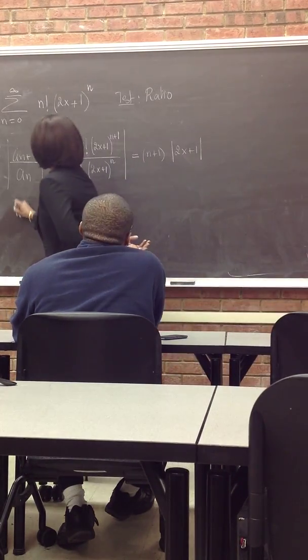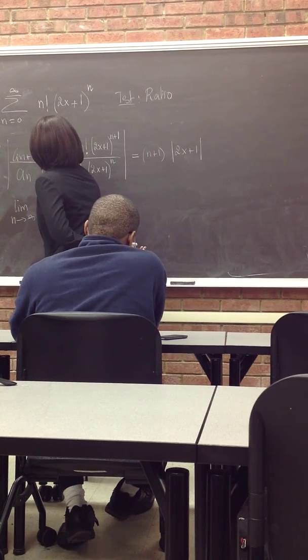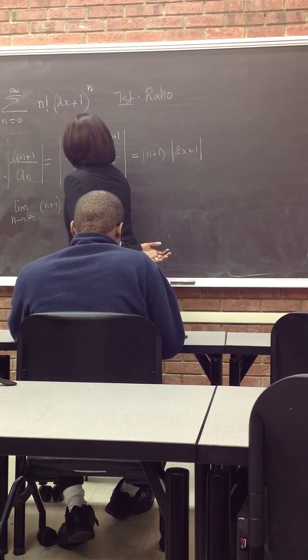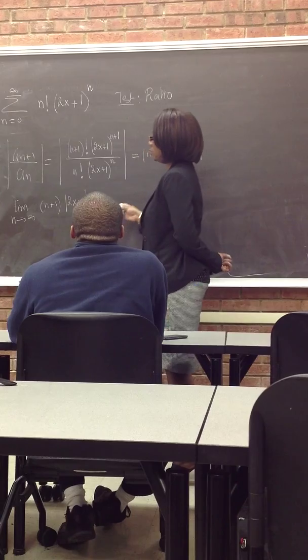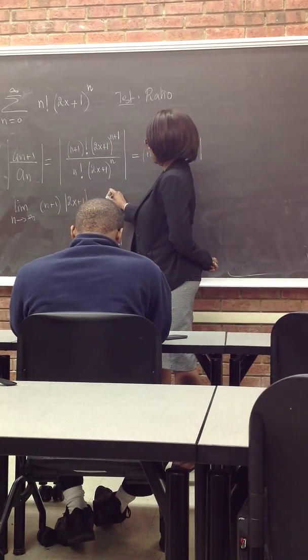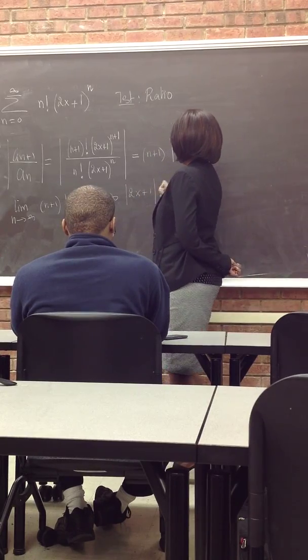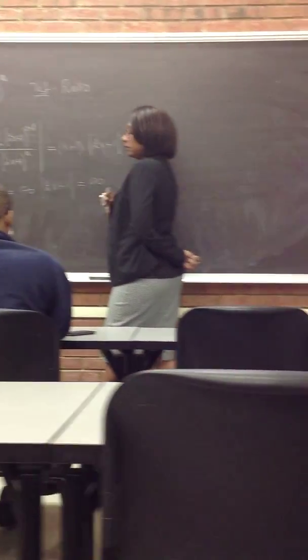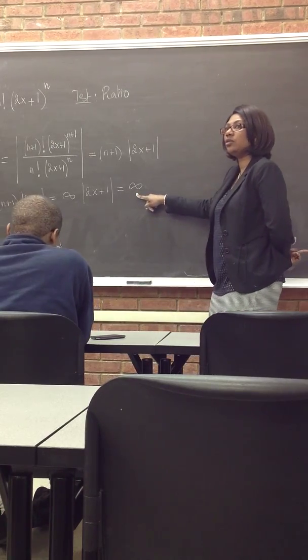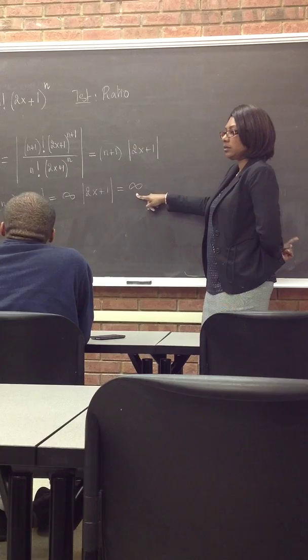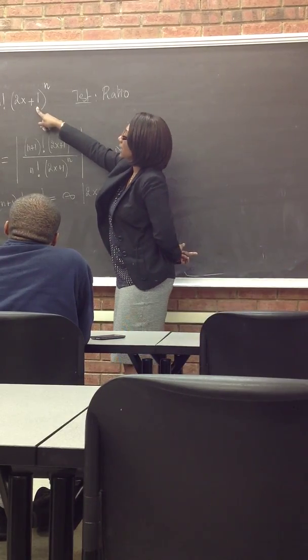So now if you're doing the limit as n goes to infinity of (n+1) times absolute value of (2x+1), as n goes to infinity, (n+1) goes to infinity, infinity times (2x+1) would be infinity. So the limit, remember ratio test, if the limit is bigger than 1 or equal to infinity, the series diverges.